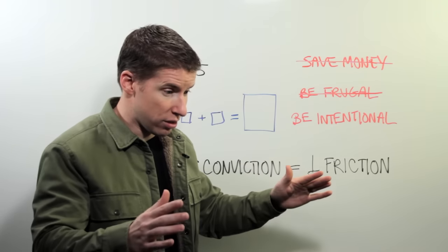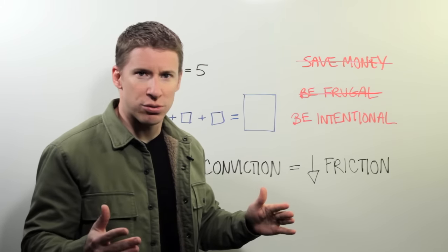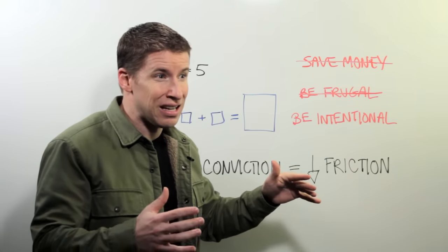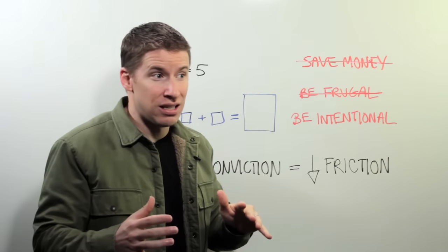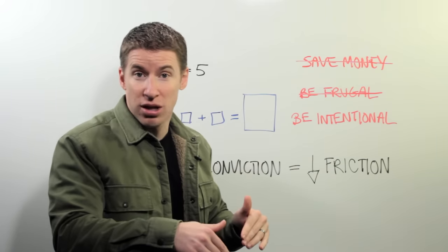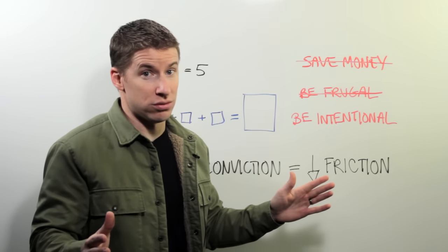As you increase the conviction, which is rule one, priorities, thinking those through, being honest with yourself. As you increase those, your friction, your stress, dissatisfaction, anxiety around what your money is doing and how it's kind of got a mind of its own, that all plummets. And you are golden at that point.